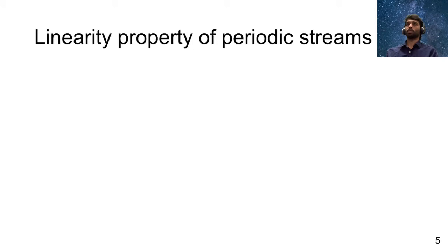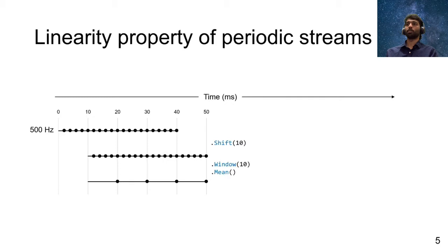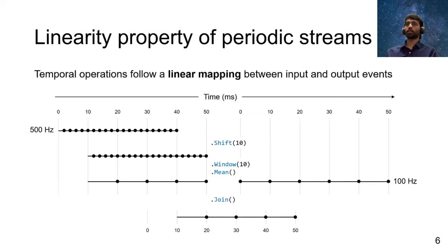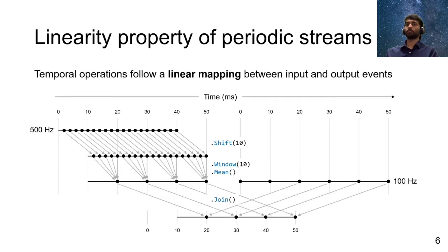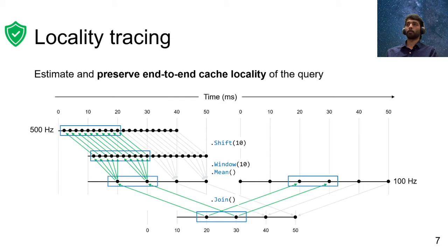The basis for these three optimizations is what we call the linearity property of periodic streams. To explain this, let's take a sample stream processing pipeline as an example. Say we have a 500 Hz signal stream, and we perform a sequence of transformations on top of it, and then finally join it with another 100 Hz signal stream. The linearity property simply states that there is a predictable linear mapping between the events generated in this query. LiveStream uses this property to precisely estimate the end-to-end cache locality of the entire query. For any given sequence of events in the final output stream, LiveStream follows the linear mapping to identify the corresponding parent intervals of events. These intervals precisely capture the end-to-end data locality of the entire query.